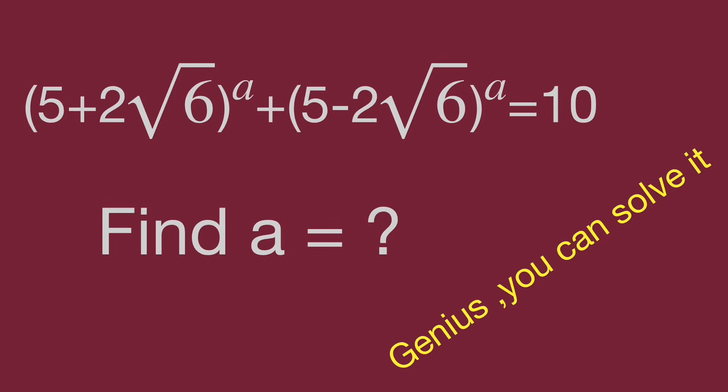The quantity (5 + 2√6)^a plus the quantity (5 − 2√6)^a equals 10. Find the value of a. Can you figure it out?